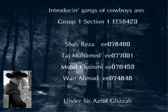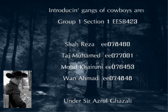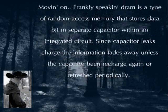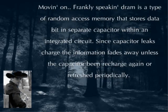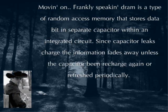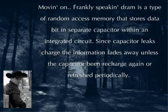Introducing Gangs of Cowboys. Frankly speaking, DRAM is a type of random access memory that stores data bits in separate capacitors within an integrated circuit. Since the capacitor leaks charge, the information fades away unless the capacitor is recharged again, or refreshed periodically.